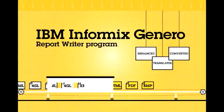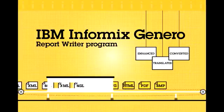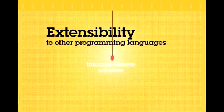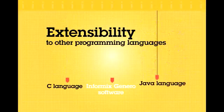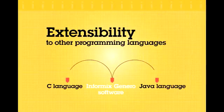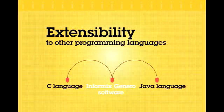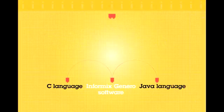Another aspect of Informix Genaro software's flexibility is its extensibility to other programming languages. Existing applications written in C or Java can be called by Informix Genaro software and vice versa, which virtually eliminates the need to rewrite the same business logic into multiple programming languages.